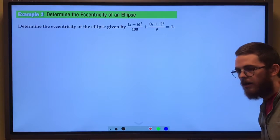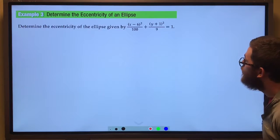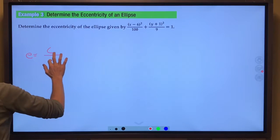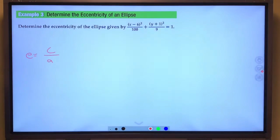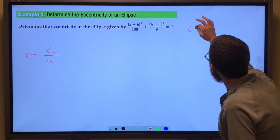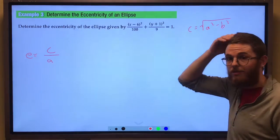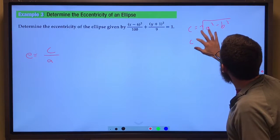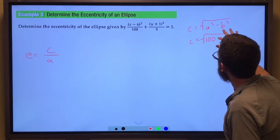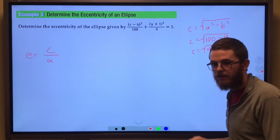So we should be able to find the eccentricity of an ellipse pretty simply because we know the eccentricity is c over a. That's all we have to do. So we can find c. We know that c is equal to the square root of a squared minus b squared. And if we know a squared is 100 and we know b squared is 9, then we know c is equal to the square root of 91.